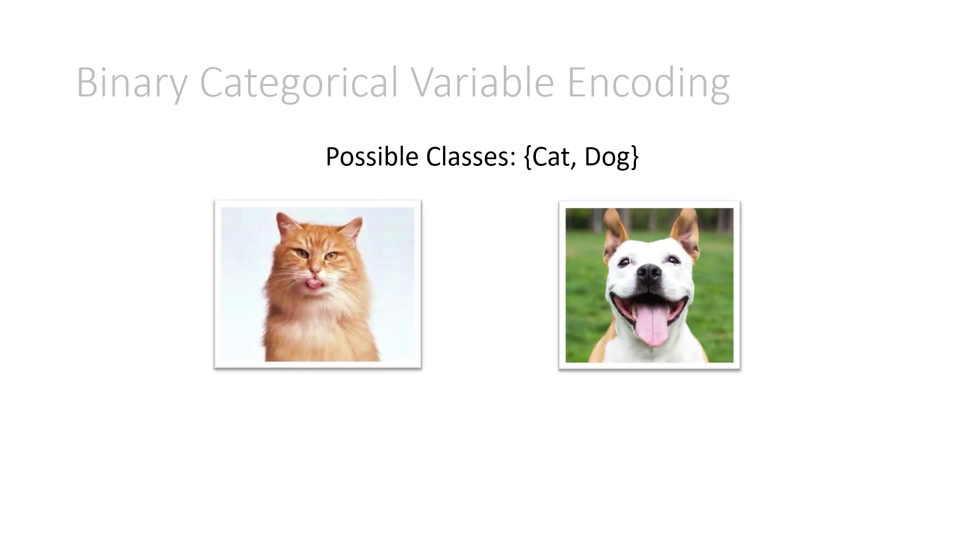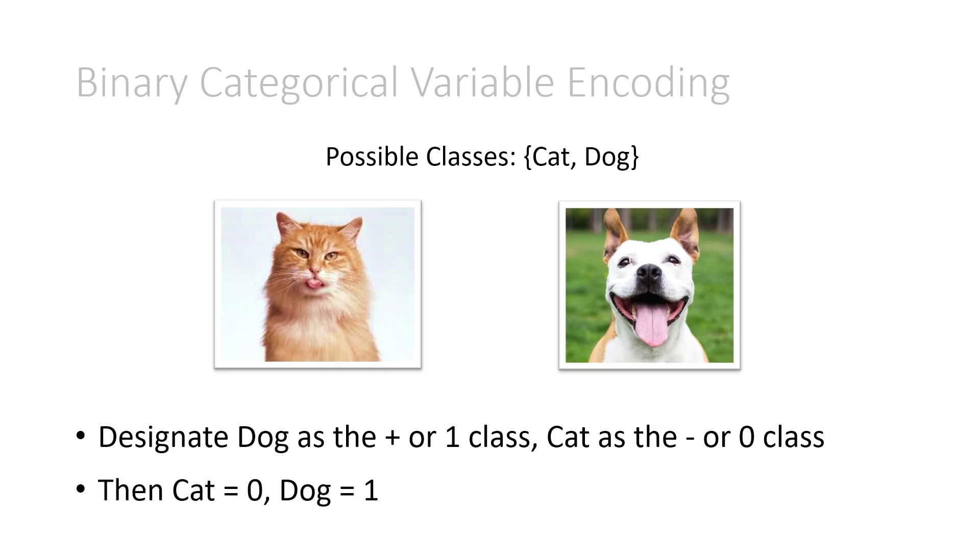So we'll look at this example. Possible classes are either cat or dog. Here's our cats and dogs. And what we do is designate dog as the positive or 1 class and cat as the negative or 0 class. There's no reason I picked dog as the positive or 1 and cat as the negative or 0. You could have flipped this around and made cat the positive or 1 class and dog as the negative or 0 class. Assuming dog is set as the positive, then cat is equal to 0 and dog is equal to 1. That's exactly what we do in the encoding.